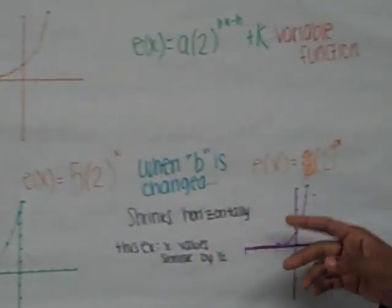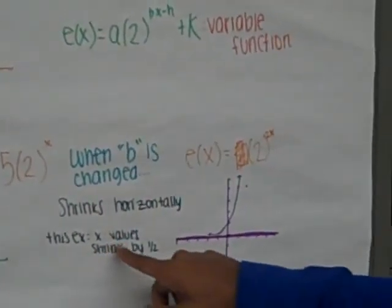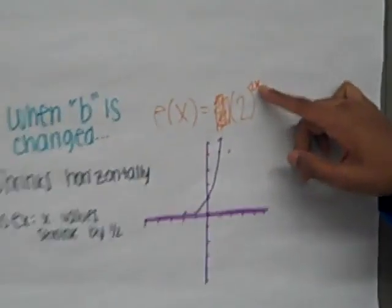Also, when b is changed, the graph shrinks horizontally. In this example, x values shrink by half, which corresponds to the 2x that we have here.